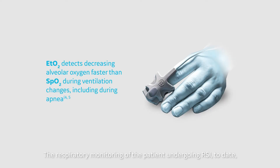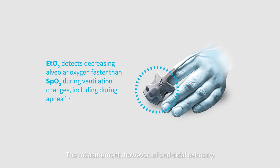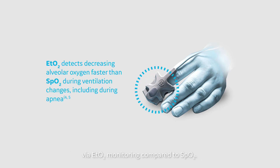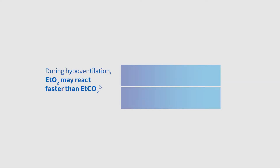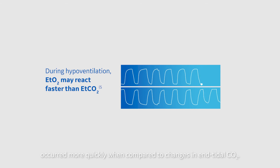The respiratory monitoring of the patient undergoing RSI to date has leveraged pulse oximetry and end-tidal carbon dioxide monitoring. The measurement, however, of end-tidal oximetry is beginning to grow in clinical utility. Changes in ventilation are more quickly recognized via ETO2 monitoring compared to SpO2. Similarly, ETO2 changes during hypoventilation occur more quickly when compared to changes in end-tidal CO2.